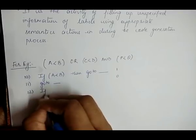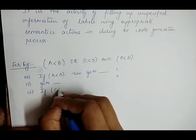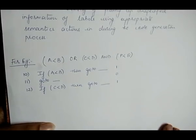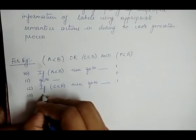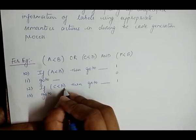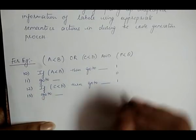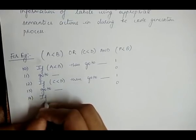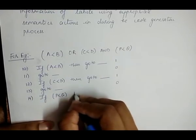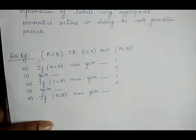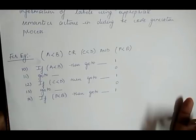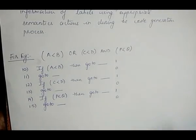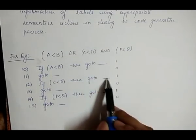Line 12 checks the next statement: 'if c is less than d, then go to the line showing the true value'. Line 13 says if c is less than d is not true, then go to the line for the else part. Line 14 checks 'if p is less than q' — if true, go to a line showing true value (represented as 1), and line 15 handles the false case (represented as 0).